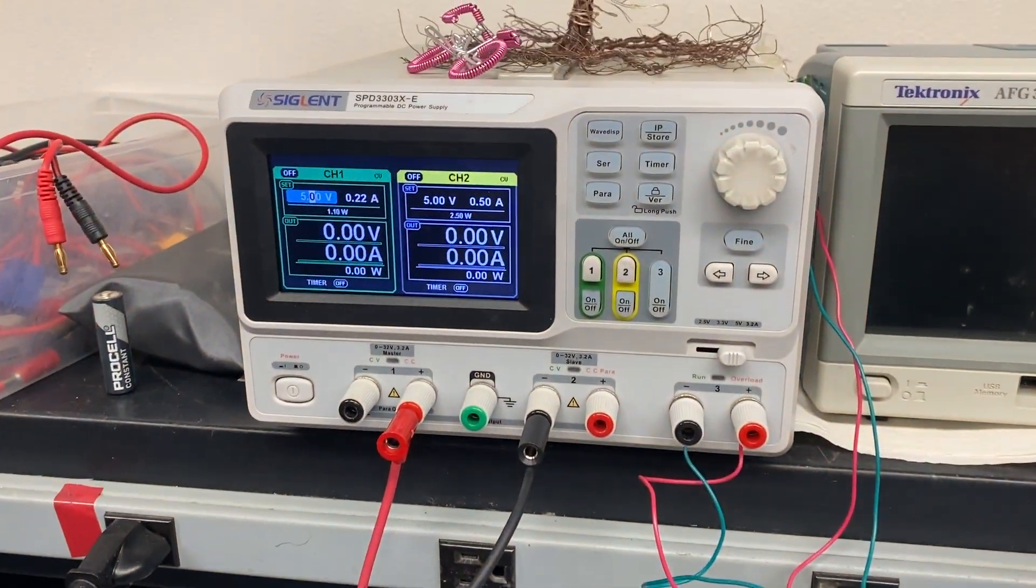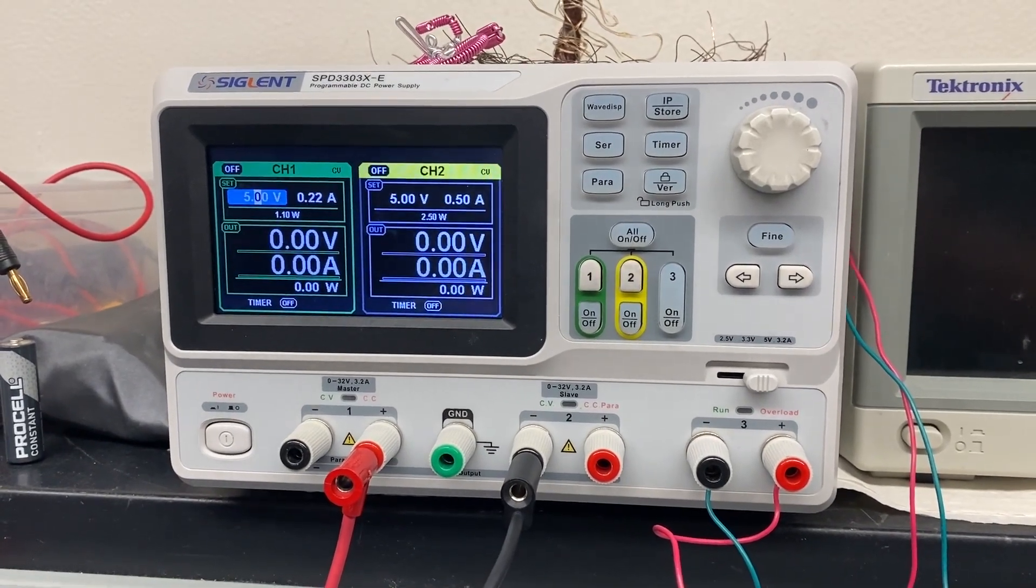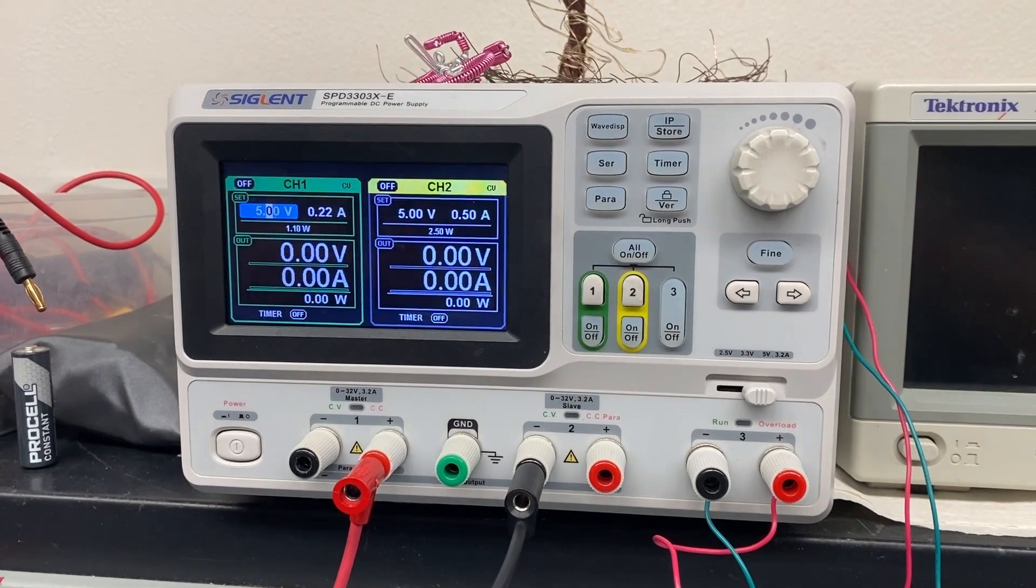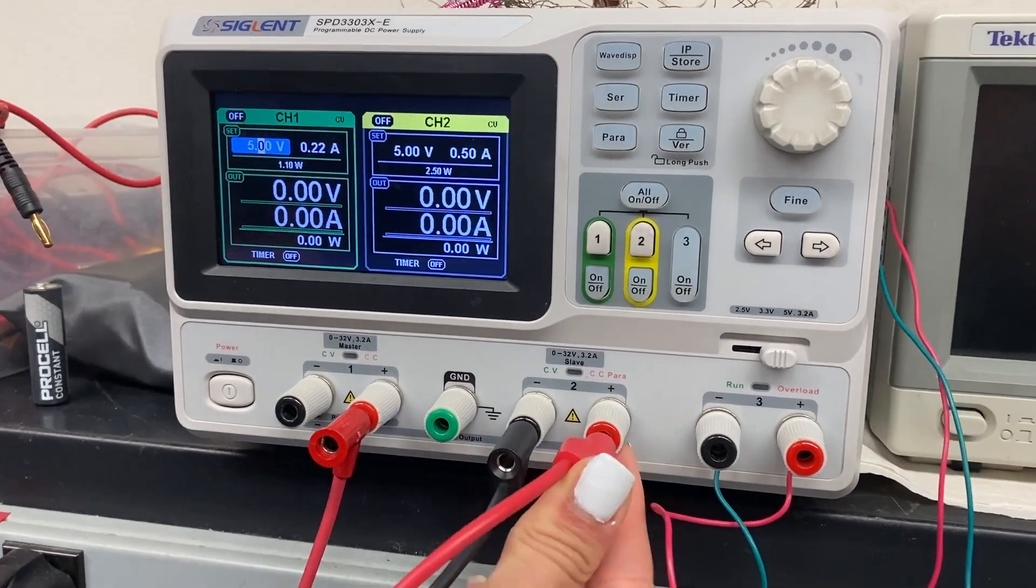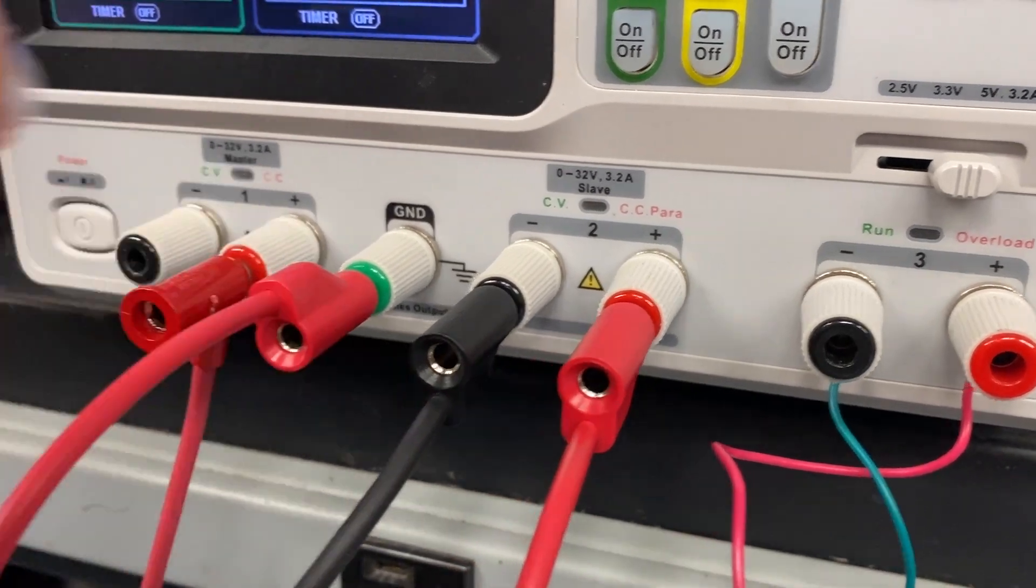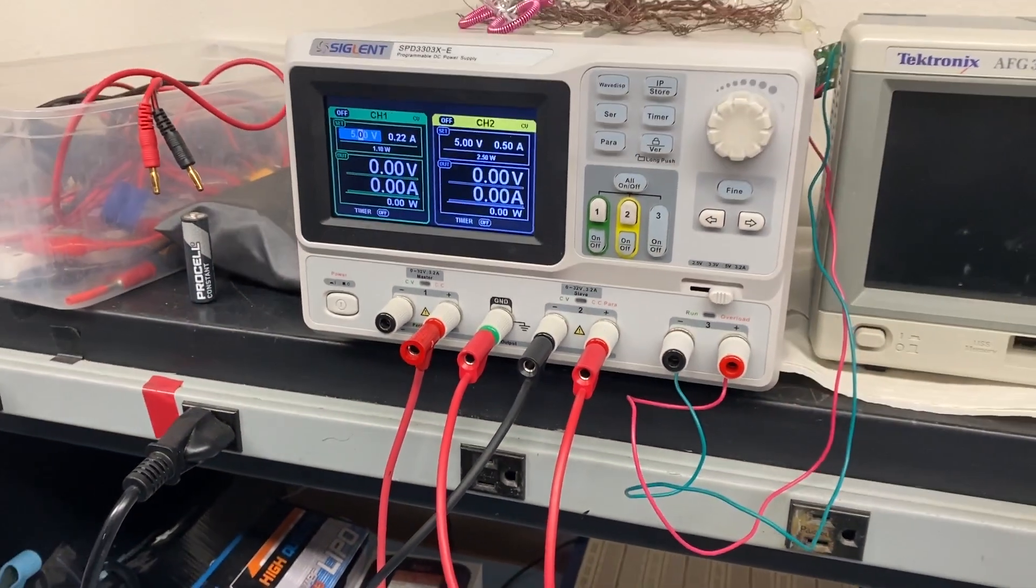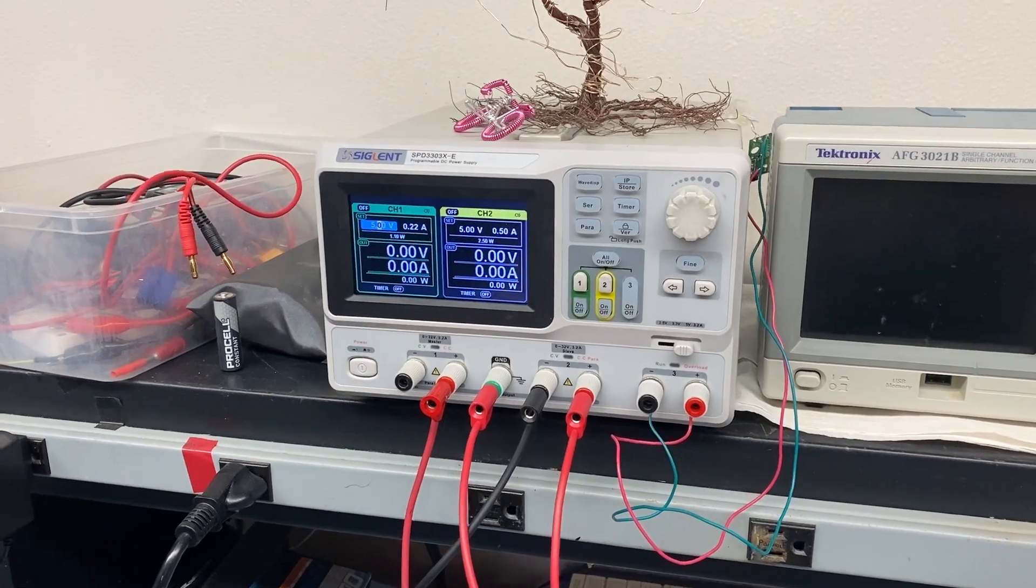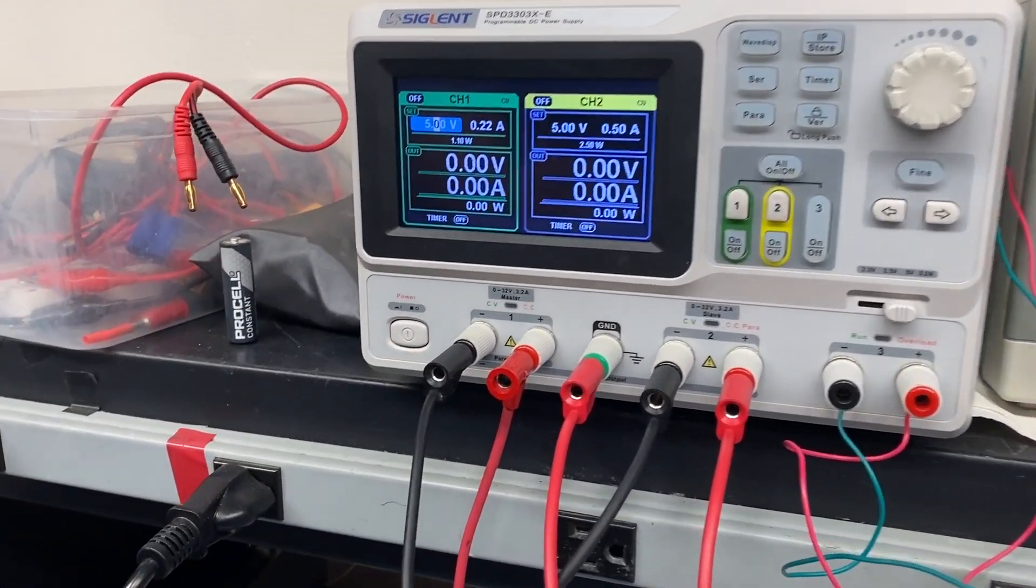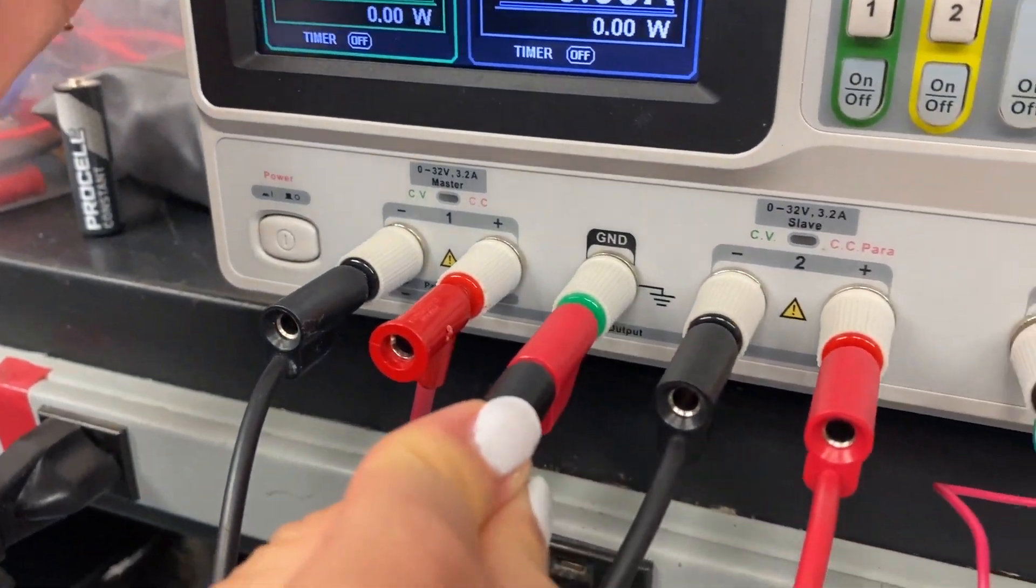Now we get to the grounding. So for my negative 5 volts, I need to connect the positive terminal to ground. So you'll be grounding the positive terminal of the channel with the negative voltage, just like that. And then for channel 1, it's just as always, just connect the negative terminal onto ground. Here, ground is here.